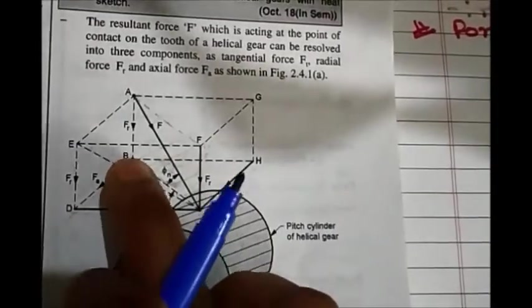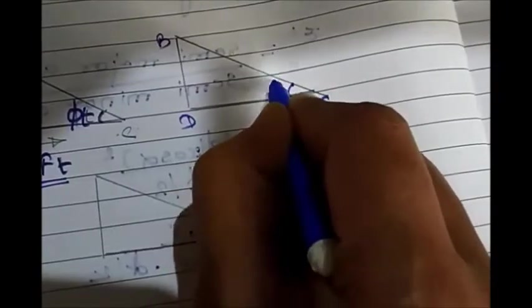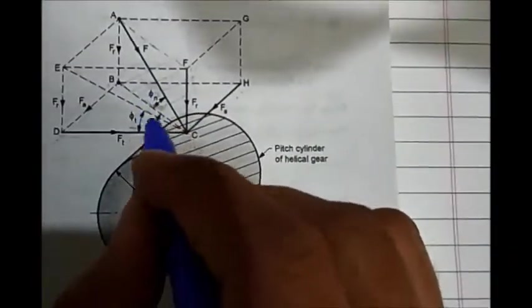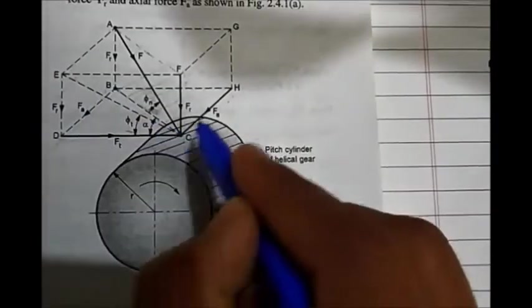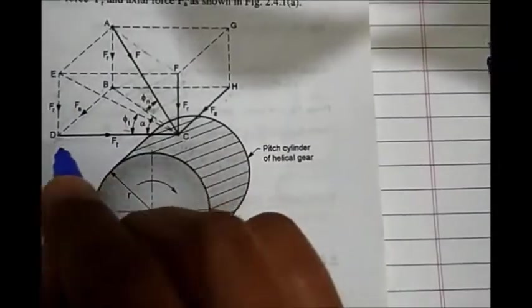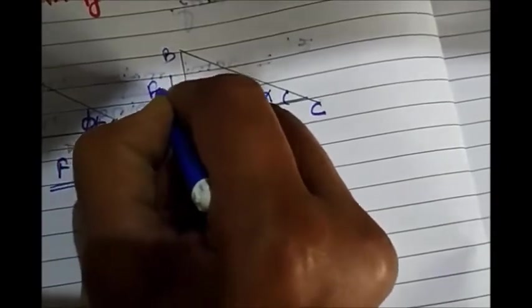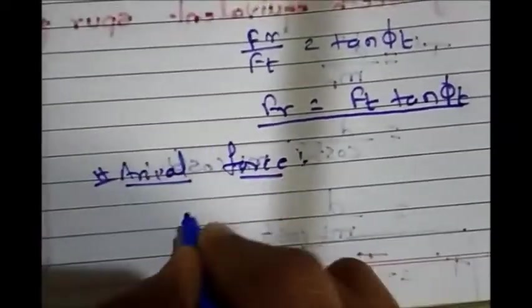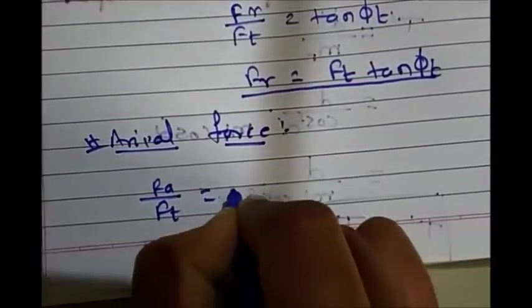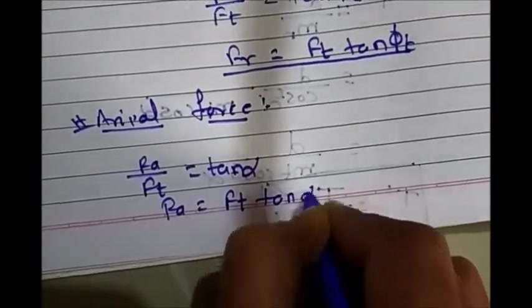Now consider triangle BDC, where angle BCD is alpha. Taking that triangle outside, DC is FT, BD is FA, and CH is also FA. FA is the opposite side and FT is the hypotenuse — so the axial force FA equals FT × tan(α). This is the relation for axial force in terms of FT.